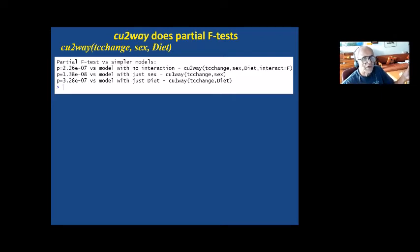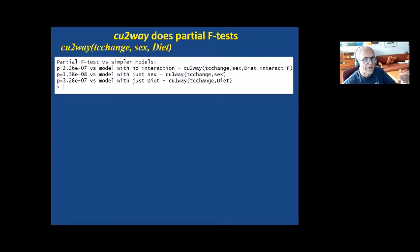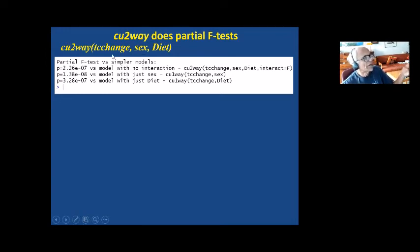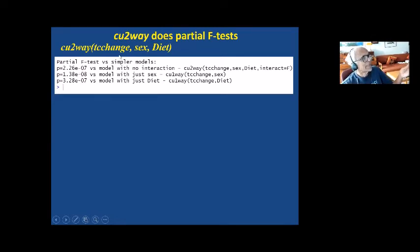Any CU function that has a model with more than one variable tries to do these partial F-tests to compare that model with simpler nested models — that is, models that have fewer parameters to estimate. It compares the two-factor model with interaction against the same two factors without interaction, and then against just one factor — sex or diet — and gives a p-value for the improvement in fit. These are highly significant, so this model really is the best of those three models for TC change.